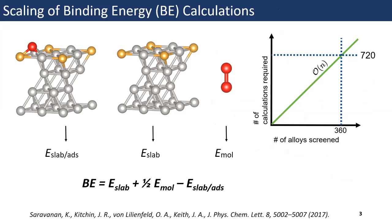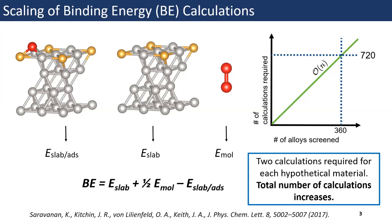Let's consider a common descriptor that we calculate using DFT: the binding energy. Normally, we take three systems — a slab, an adsorbate, and both together — and evaluate all three with DFT to calculate the binding energy. However, there's a problem: when we start with these three calculations and need a new binding energy for every catalyst, these numbers increase more and more. This can be a problem for large-scale screening studies, big data applications, and machine learning in catalysis research because obtaining all this data is expensive with just DFT.